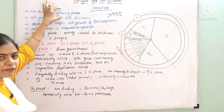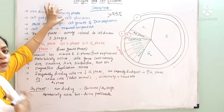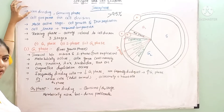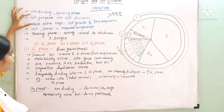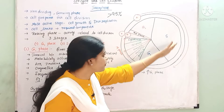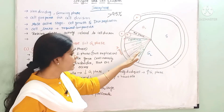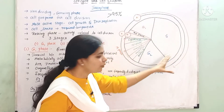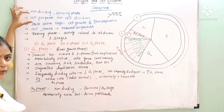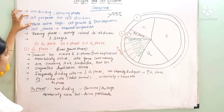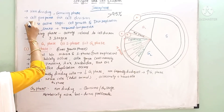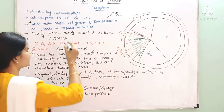Interphase is a growing phase — it is the growth phase of the cell. It is a long phase, non-dividing and growing. The cell prepares for cell division during interphase only. This is the most active stage, where cell growth occurs.